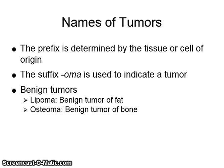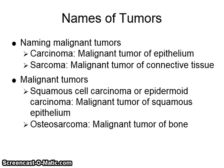Names of tumors. The prefix is determined by the tissue or cell of origin. The suffix -OMA is used to indicate a tumor. For benign tumors: a lipoma indicates a benign tumor of fat; an osteoma, a benign tumor of bone. For malignant tumors: carcinoma is a malignant tumor of epithelium; sarcoma is a malignant tumor of connective tissue. A squamous cell carcinoma or epidermoid carcinoma is a malignant tumor of squamous epithelium. An osteosarcoma is a malignant tumor of bone.